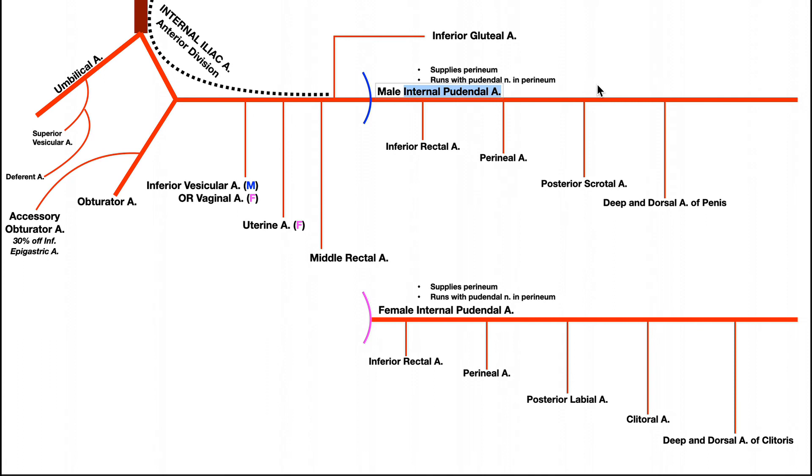Now, regardless of which gender we're looking at, the first two branches are the same. This is not sexual dimorphism. And these two arteries are the inferior rectal artery and the perineal artery. Notice we have both of these in males and females.